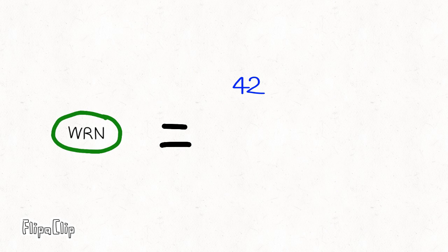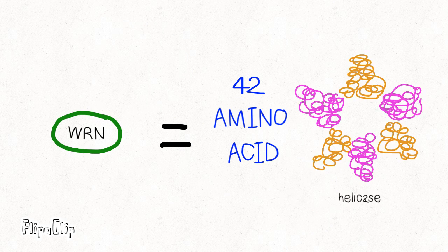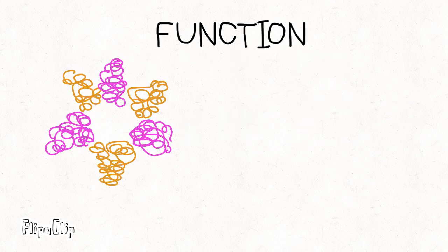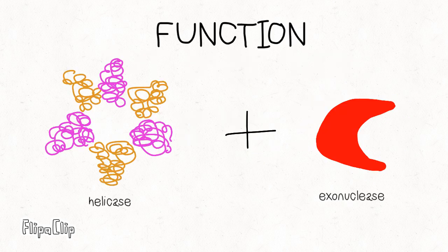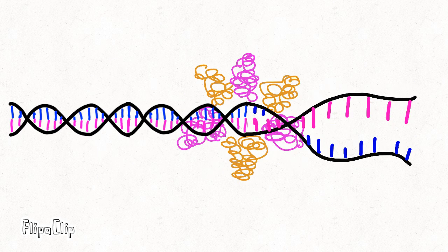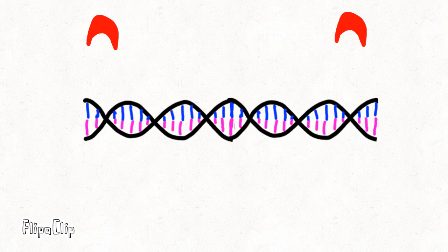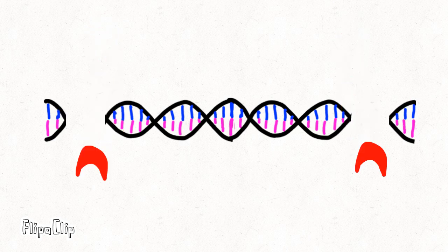The Werner protein is a 42-amino acid protein in the REC-Q DNA helicase family. It functions as both a helicase enzyme and an exonuclease. Helicase enzymes unwind and separate DNA during DNA replication. Exonucleases trim the broken ends of damaged DNA by removing nucleotides.